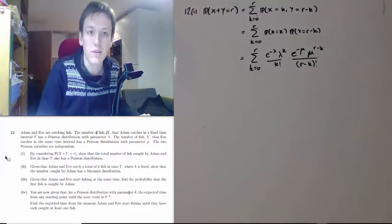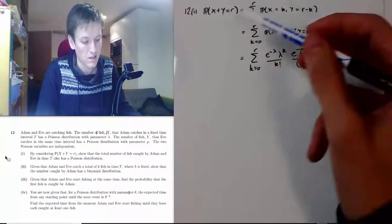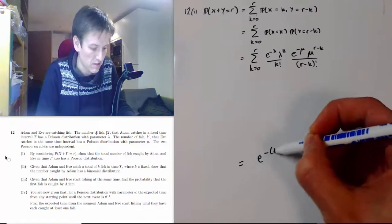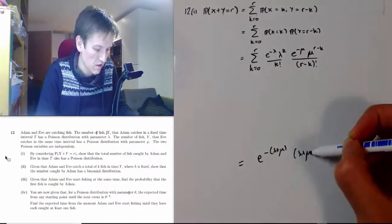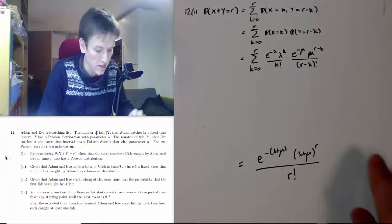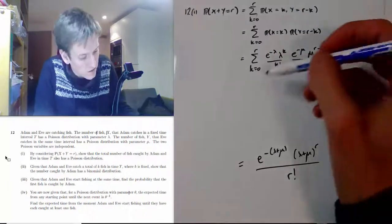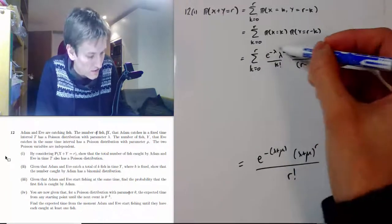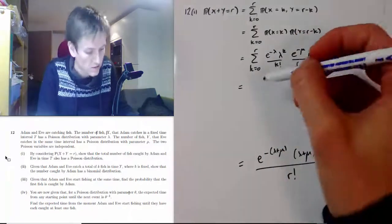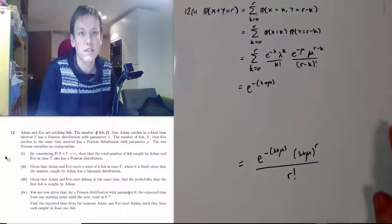We want to turn this into a Poisson probability with rate lambda plus mu, so our target is e to the minus (lambda plus mu) times (lambda plus mu) to the r divided by r factorial. The e to the minus lambda and e to the minus mu terms have no k dependency, so we can pull them out of the sum to get e to the minus (lambda plus mu). We can also pull out the r factorial term since it doesn't depend on k.